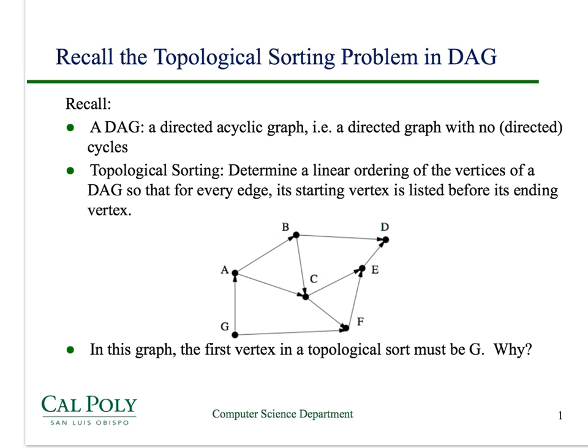In this screencast, I want to discuss an algorithm for solving the topological sorting problem in a directed acyclic graph. A directed acyclic graph is a directed graph — the edges have direction, they go from a start vertex to an end vertex — with no cycles.